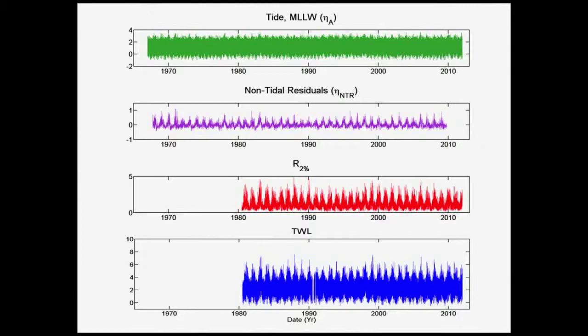Tide and non-tidal residuals are measured from tide gauges. And then we have our run-up, which again is a function of wave height and wavelength — which is a function of wave period — and those can be measured using a wave buoy. If we add those together, we can get a total water level time series for off the coast of Oregon.